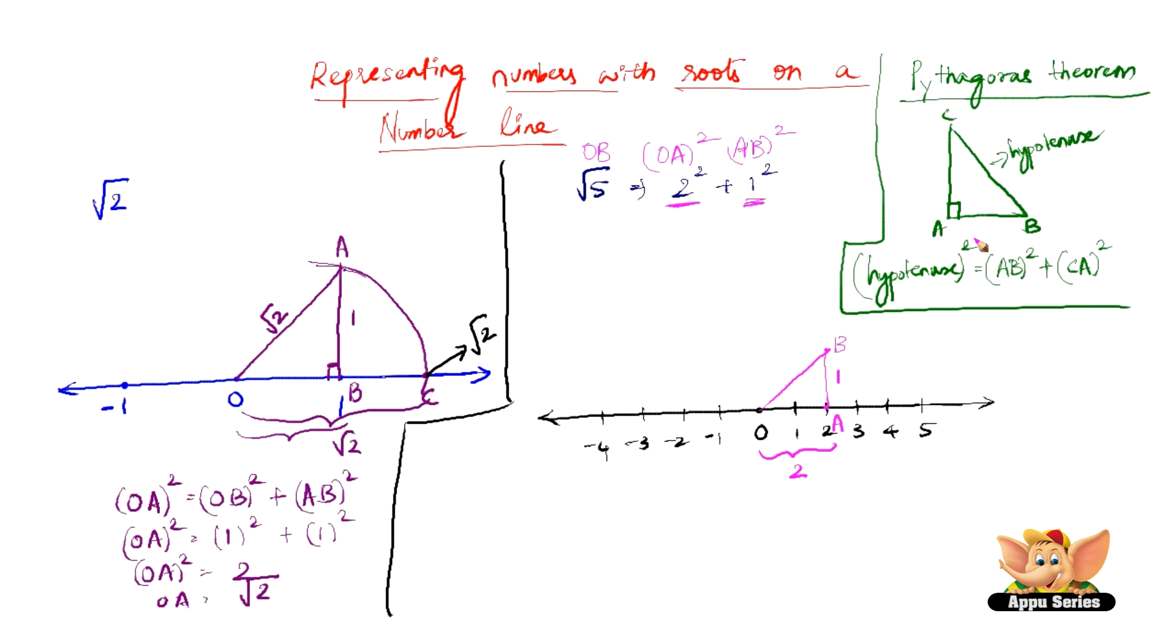So we have AB as 1, this is 2. Therefore OB will be: OB squared equals OA squared plus AB squared, which is nothing but OA is 2, 2 squared plus AB is 1, 1 squared. 2 squared plus 1 squared is 5. So OB squared equals 5, and OB equals root 5. So OB is root 5.